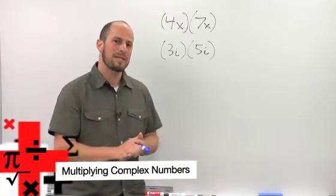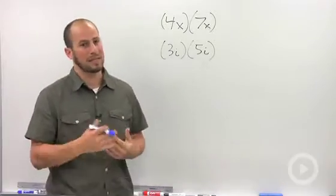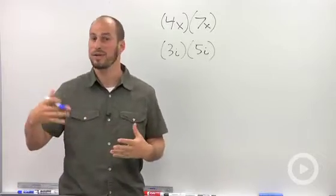Multiplying complex numbers. So what we're going to talk about now is multiplying complex numbers or numbers that include the letter i, square root of negative 1.